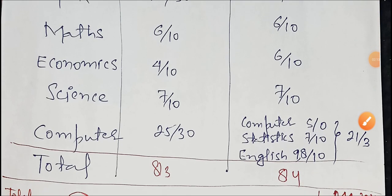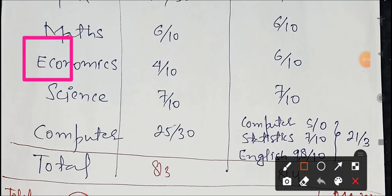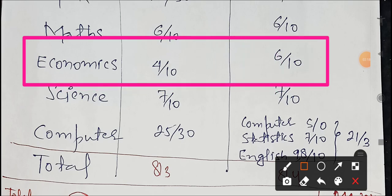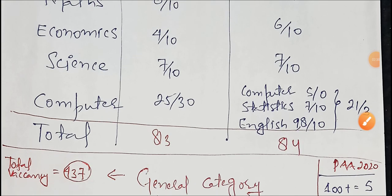For Economics, in Punjab Account exam the difficulty level was higher, so we took 4 marks as average. In Finance Account exam it was easier, so we took 6 out of 10 as average.